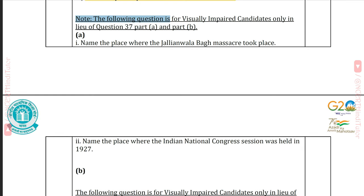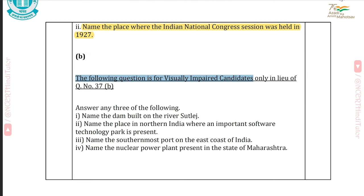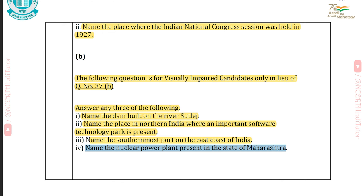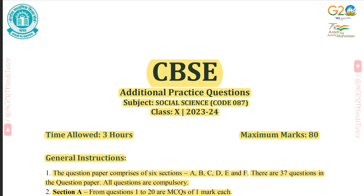For visually impaired candidates in lieu of Question 37 — Part A: Name the place where the Jallianwala Bagh massacre took place — Answer: Punjab. Name the place where the Indian National Congress session was held in 1927 — Answer: Maharashtra. Part B — answer any three: name the dam built on the river Sutlej — Bhakra Nangal Dam; name the software technology park in Northern India — Noida; name the southernmost port on the East Coast — Tuticorin; name the nuclear power plant in Maharashtra — Tarapur Atomic Power Plant.